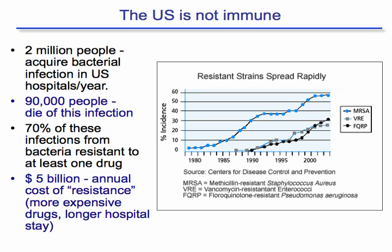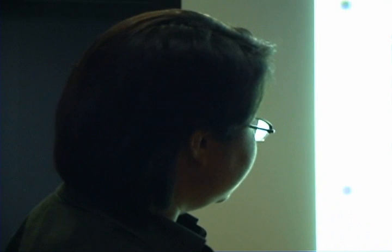Wearing my clinical hat, I've unfortunately had to tell a lot of patients and families 'I'm sorry, your heart is failing, your liver is failing, your lungs are failing, we don't have any other options.' But the biggest shock is when I tell patients 'I'm sorry, we have no antibiotics left' — and it happens. In the US, 2 million people acquire bacterial infections in hospitals each year; 90,000 die. Seventy percent of these infections are resistant to at least one drug, costing about 5 billion dollars.